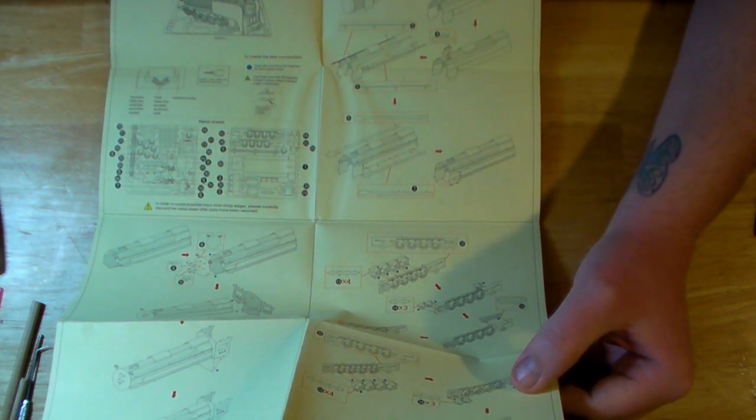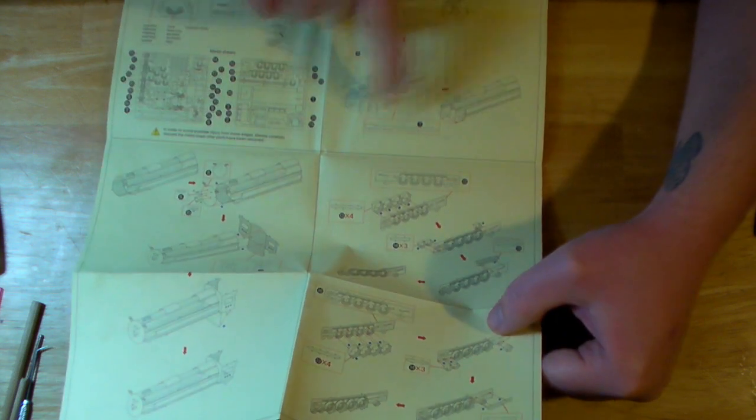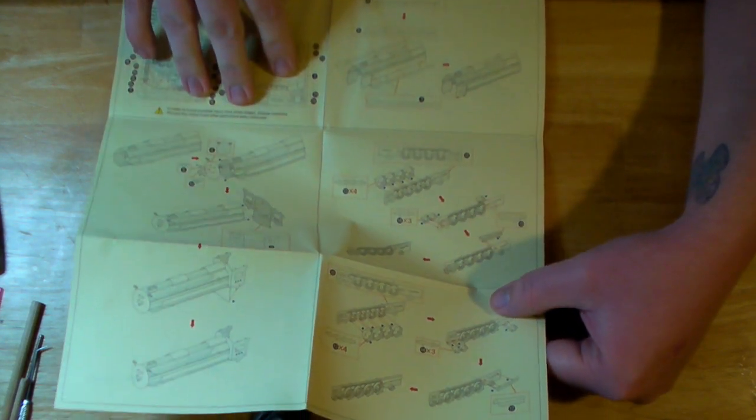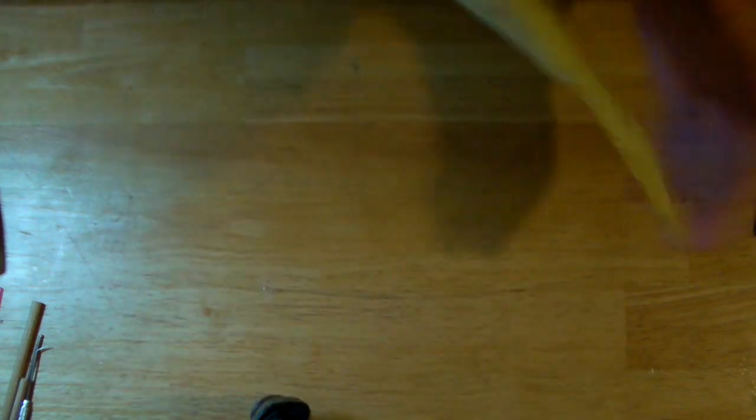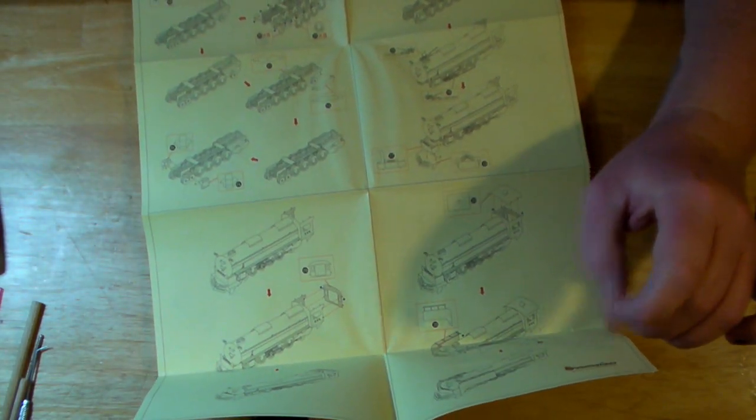And you know the part numbers, they kind of lead you through with the arrows. Although some of these kits can be a little confusing. I've got two pages. So let's get started.